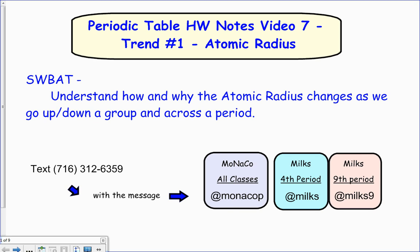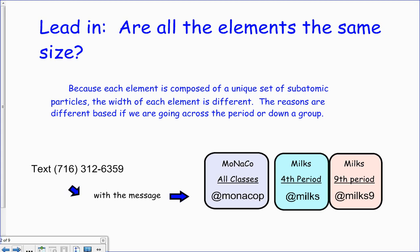So we need to understand how atomic radius changes as I go up or down in the periodic table. Are all elements the same size? Because each element has a different number of protons and electrons, of course it's got to take up more room.